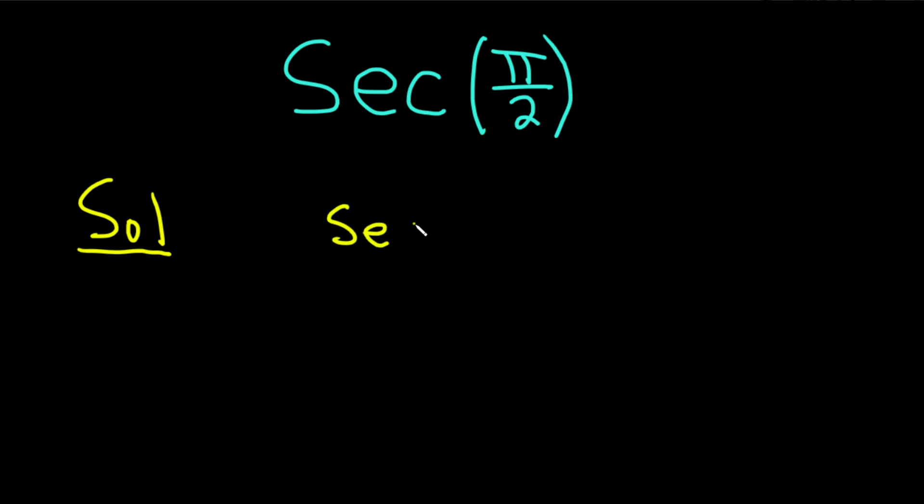Well, the secant of x is equal to 1 over cosine x.